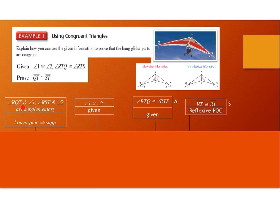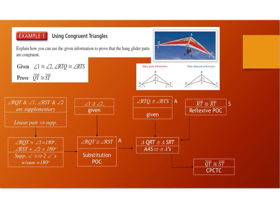We can deduce that angles RQT and angle 1 are supplementary. We can also deduce that angles RST and angle 2 are supplementary, because a linear pair implies supplementary angles. From the supplementary angles, we can conclude that the two angles will sum to 180 degrees. And then if angle 1 is congruent to angle 2, and the two pairs of supplementary angles add up to 180, by substitution we can conclude that angle RQT is congruent to angle RST.